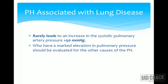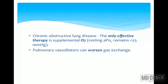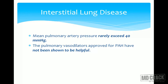Category 3 patients hardly ever have PAP above 50 mmHg. If PAP exceeds 50 mmHg, look for another cause of PH. The only effective treatment in this category is oxygen supplementation in chronic obstructive lung disease. Pulmonary vasodilators worsen gas exchange and increase dyspnea. In interstitial lung disease, PAP rarely exceeds 40 mmHg and vasodilators are not helpful.